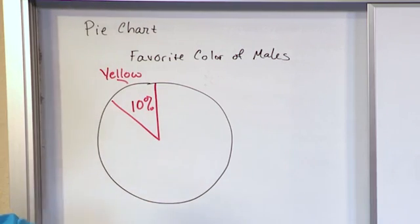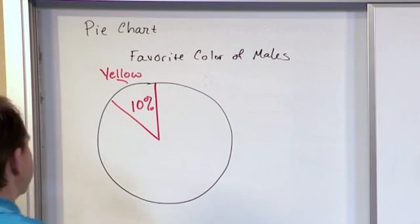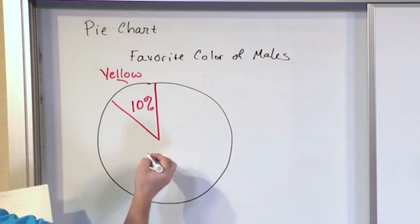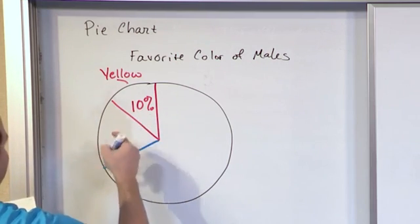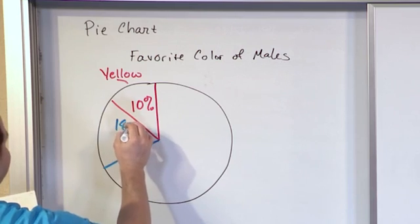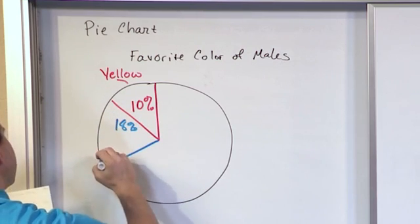And sometimes a pie chart uses different colors. Sometimes it's shaded. I'm not going to shade it here because I don't want to clutter up the board. But I might have another wedge over here, right? Which represents if this is 10%, this is more than that. So let's say this is 18%, right? And this is purple.